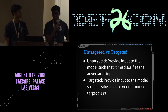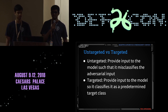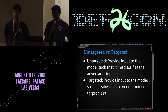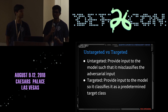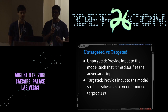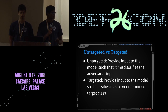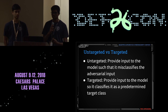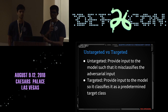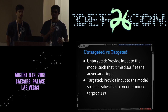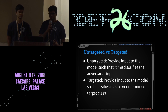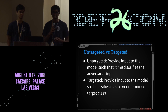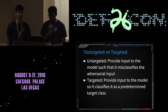Going more into the definitions of adversarial examples, there are two types: untargeted attacks and targeted attacks. Untargeted attacks mean we provide input to the model to trick it into misclassifying as anything else. In a targeted attack, we provide input such that we want the model to classify it as a predetermined target. Targeted attacks are more difficult than untargeted attacks because we're trying to trick the model into classifying input as a specific class.